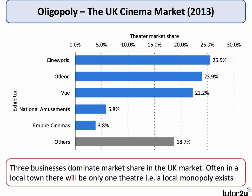Here's an example of an oligopoly. The data is from 2013, but it's a good example of how a market can be dominated by just a handful of firms. The UK cinema market is best described as an oligopoly — Cineworld, Odeon, and Vue together take the lion's share of the market. This would be a classic multiple choice question: we have to work out the three-firm or five-firm concentration ratio. Together those three firms take well over 70% of the market.